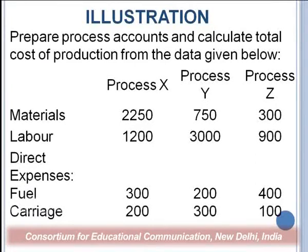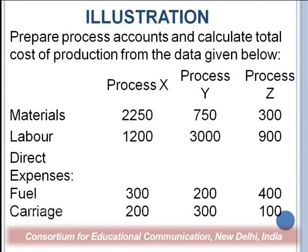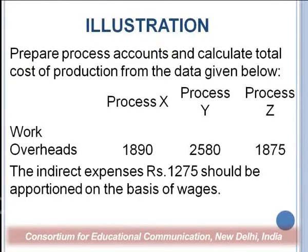Now let me take a very simple example so we can easily understand. There are three processes in a factory: X, Y, Z. You are given the material cost, labour cost, and direct expenses — fuel and carriage — for all three processes. Works overhead is 1890, 2580, and 1875 respectively. It further says that direct expenses of rupees 1275 should be apportioned on the basis of wages. So you have material cost, labour cost, direct expenses, works overhead, and indirect expenses of 1275 to be divided in proportion of direct wages across departments X, Y, Z.